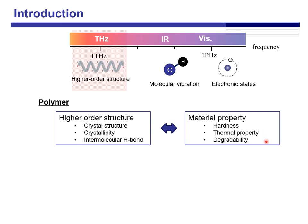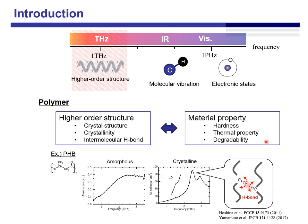That's why we have studied polymers in terahertz for decades. For example, this shows the terahertz spectra of PUHP in different crystalline forms, amorphous and crystalline. These two show completely different spectral patterns. We also made assignments by DFT calculation and finally found that these modes originated in the intermolecular hydrogen bond vibration.